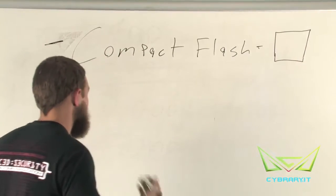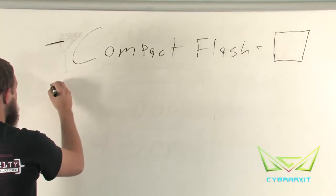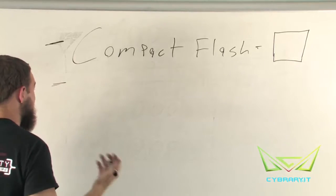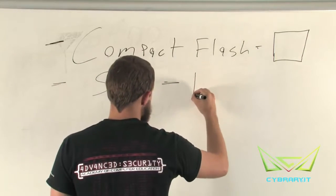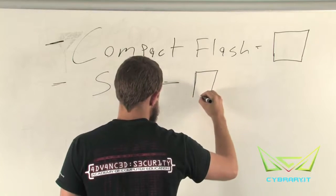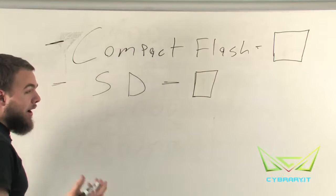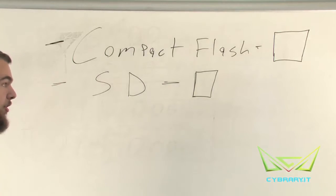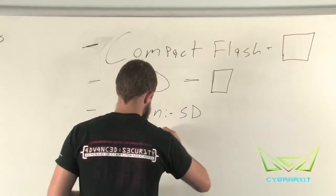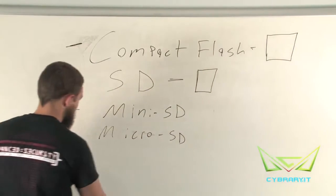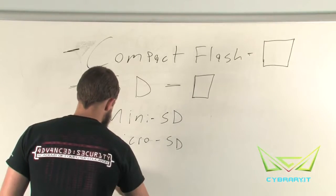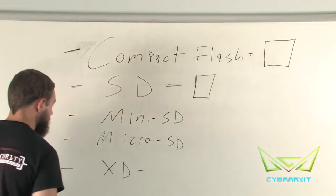And then we have our SD card, which will be a bit smaller and is more standard for current small pocket cameras or some DSLR cameras. Then we have mini SD, micro SD, and we have XD. And XD is more for some older cameras.